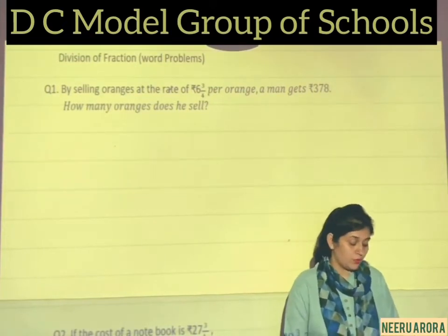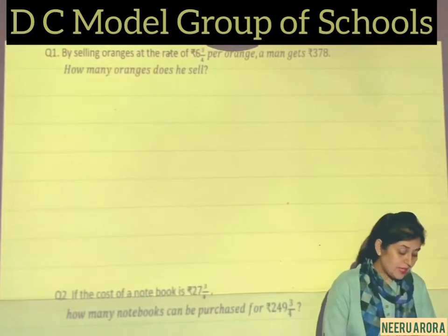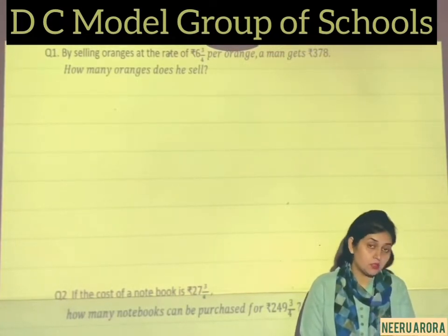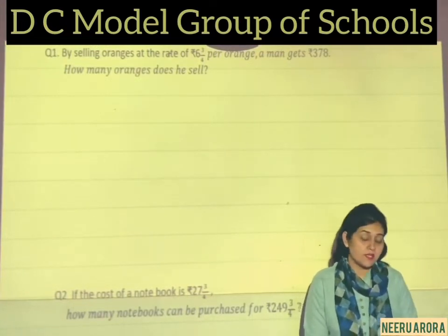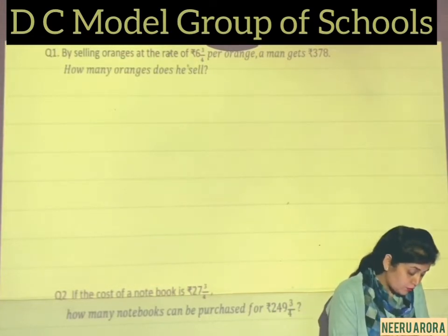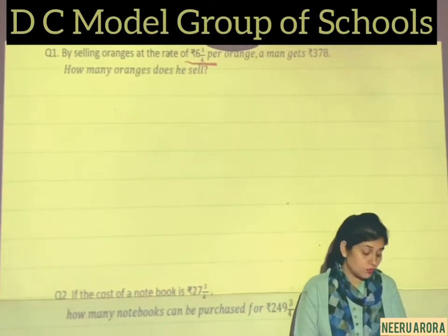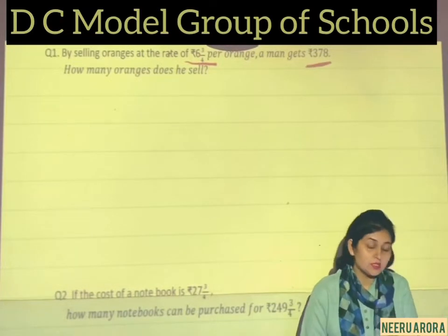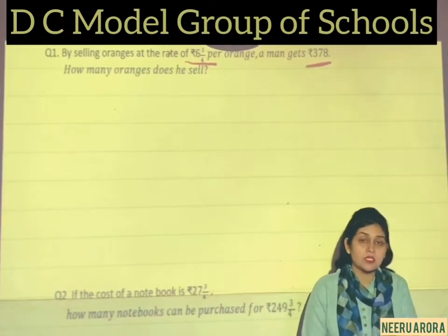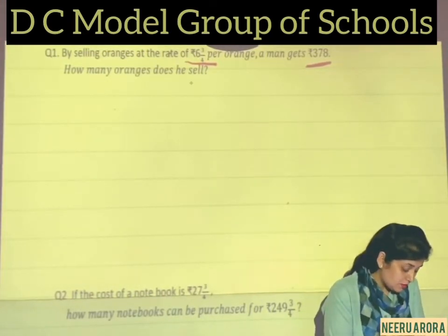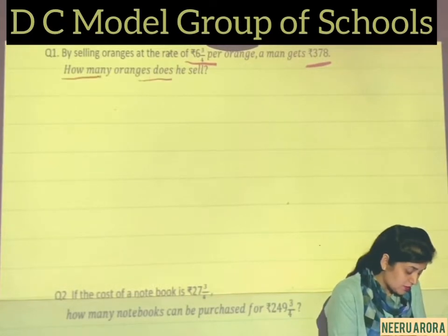Let's start with our first word problem: by selling oranges at the rate of Rs. 6 3/4 per orange, a man gets Rs. 378. So how many oranges does he sell? This word problem says that the cost of 1 orange is Rs. 6 3/4, and the total money given to the seller is Rs. 378.